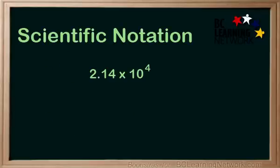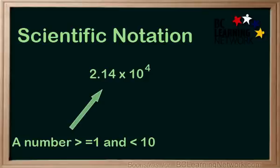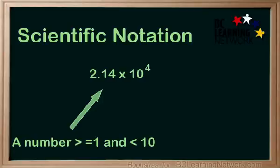Scientific notation is a very specific way of representing a number. The first number is a number greater than or equal to 1 and less than 10. This number is usually written correct to two decimal places. The second factor is a power of 10, either a positive power or a negative power of 10.